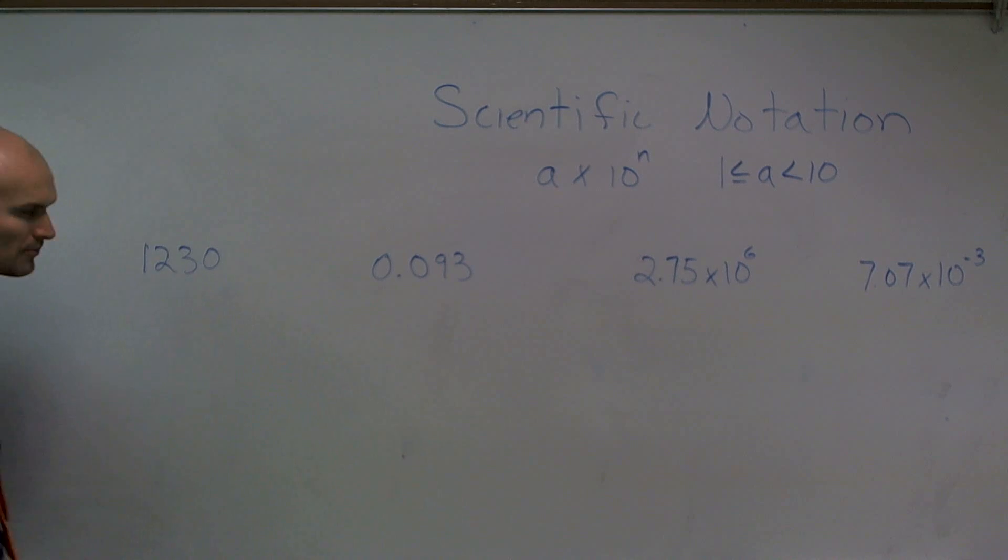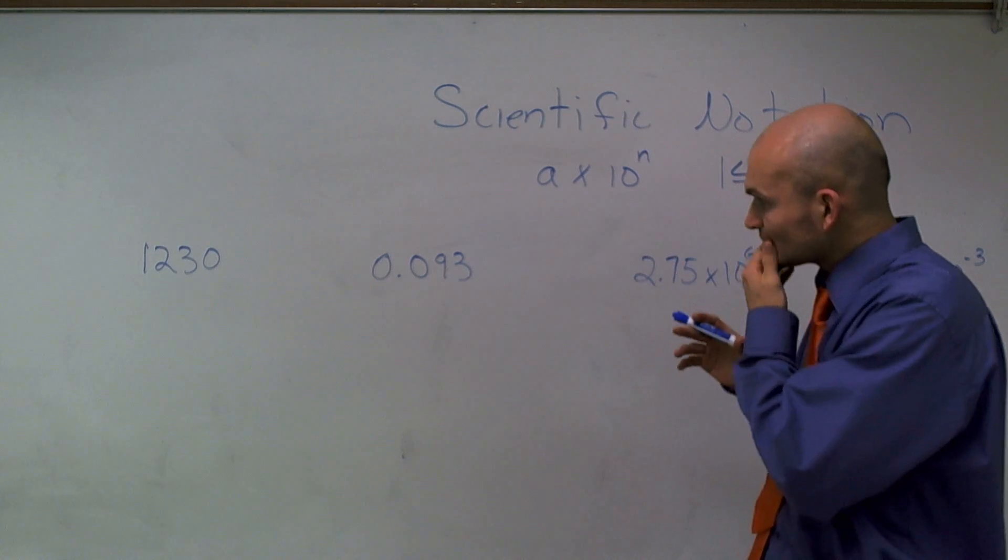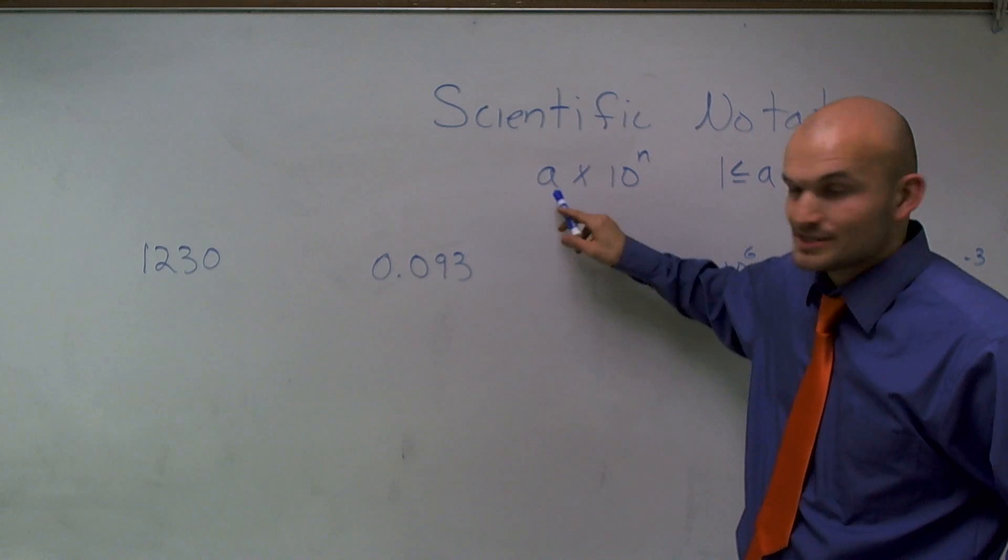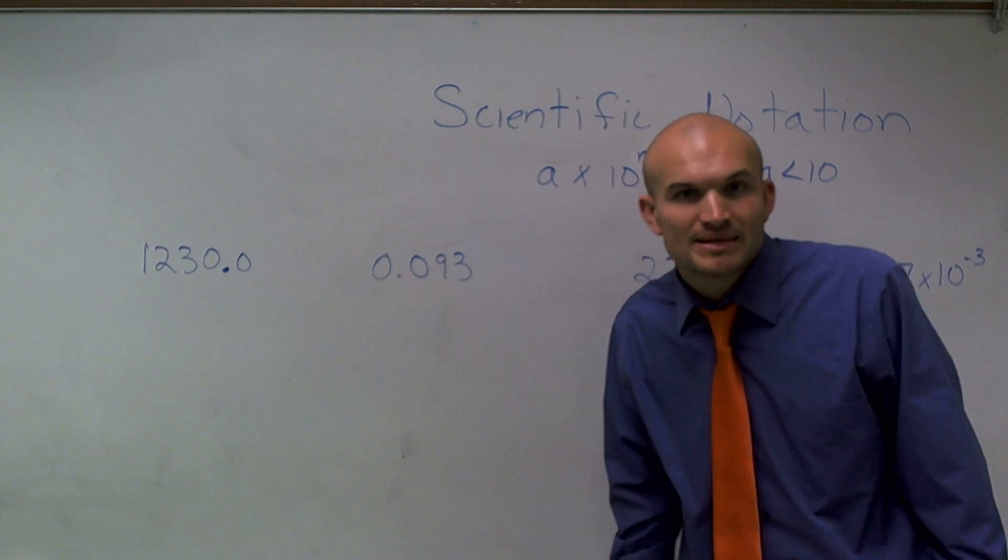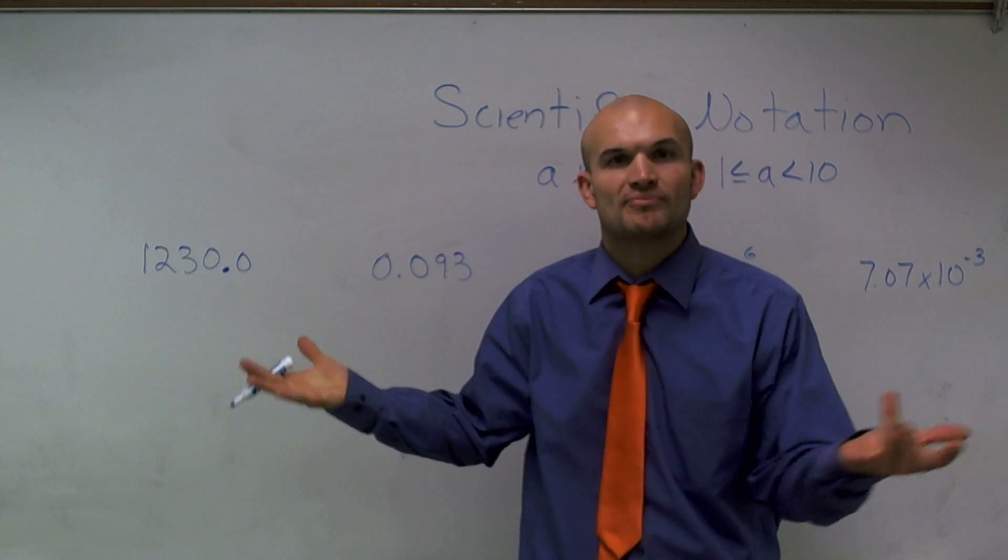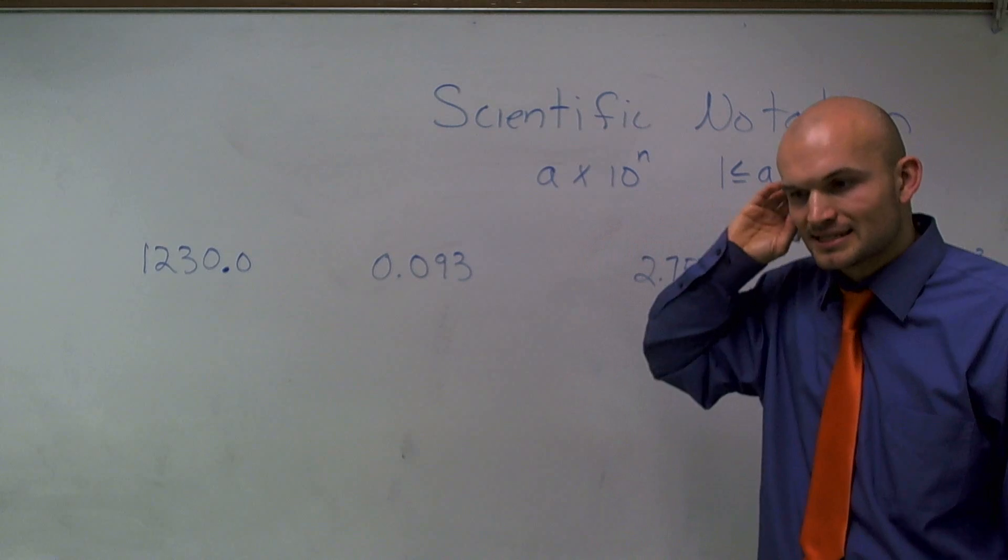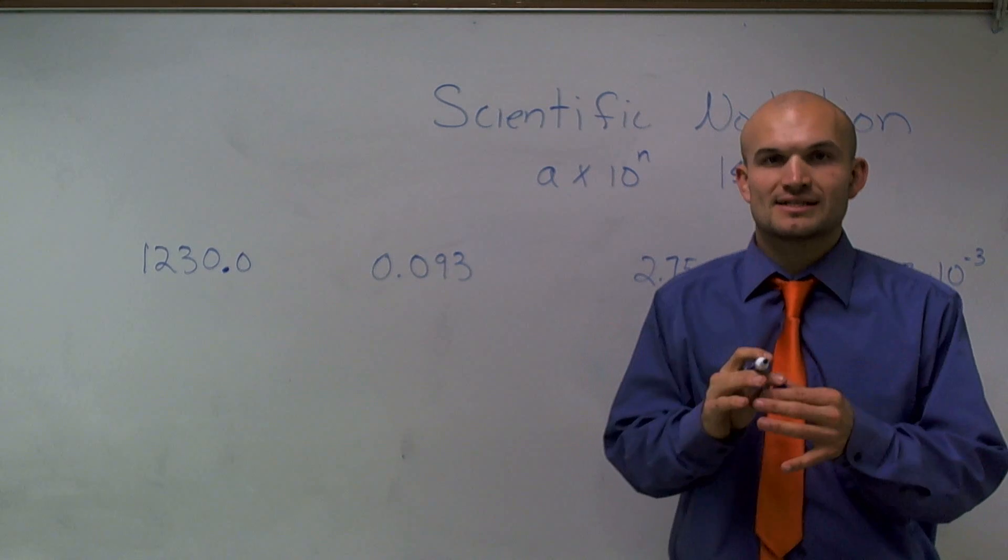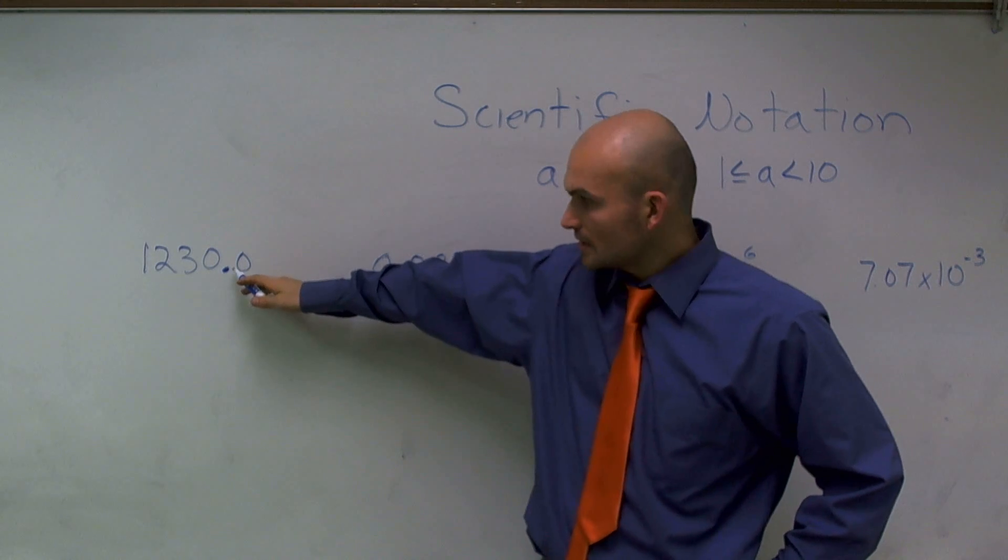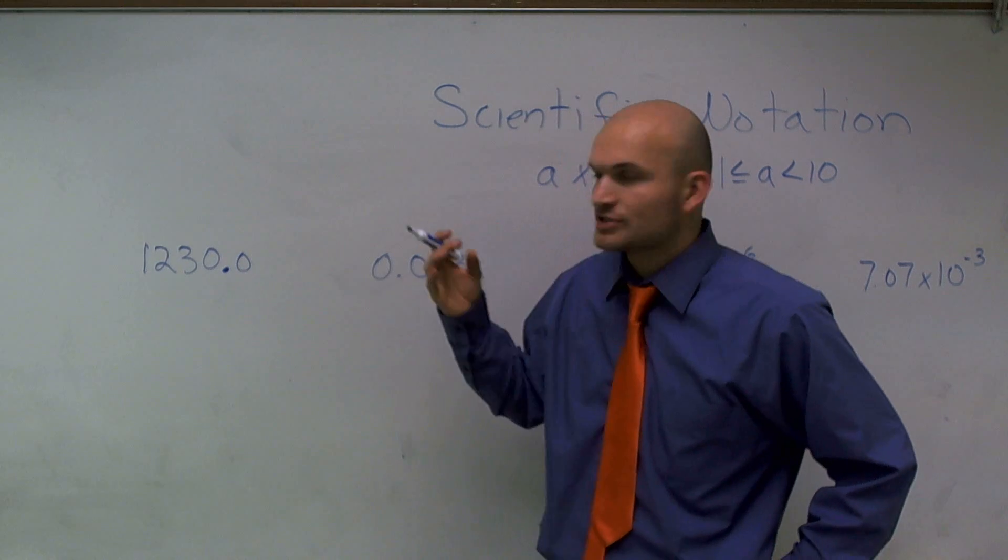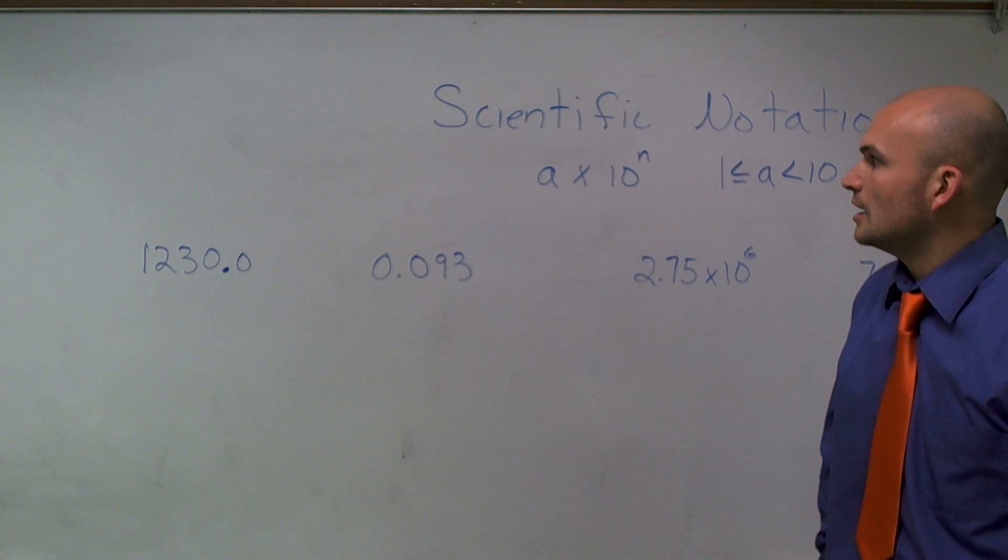So let's go ahead and take a look at our first problem. We have 1,230. Now, if I want to convert this to scientific notation, I need to write my number as a. So we know that 1,230, if I put a decimal point at the end and a 0, that still means the same answer, right? The decimal point is just going to be our placeholder where our numbers are. Now, what this multiply by 10 means is that's going to tell you where your exponent goes. Now, if I want to write this in scientific notation, I need to make sure a is between 1 and 10.